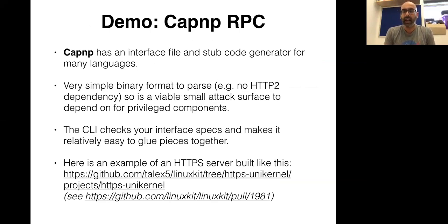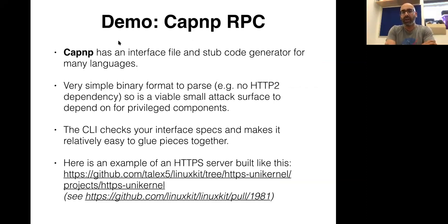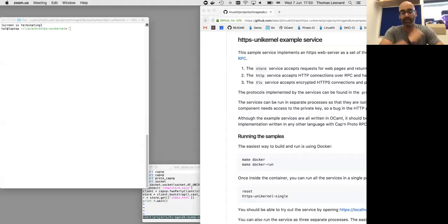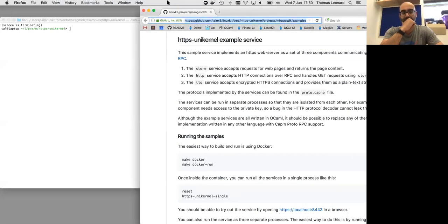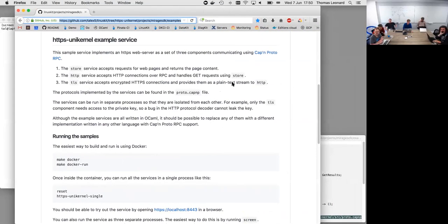I want to quickly demo Cap'n Proto because I suspect most people on this call haven't really used it before. Has anyone used Cap'n Proto before in any big applications? Thomas Leonard has put together an HTTPS server demo. So the main thing I've been doing is working on a pure OCaml implementation of the RPC protocol, because that was missing before. This HTTPS server is just a quick demo showing how to use it, currently available as a pull request against LinuxKit. You can build it very easily just using Docker if you want to test it.